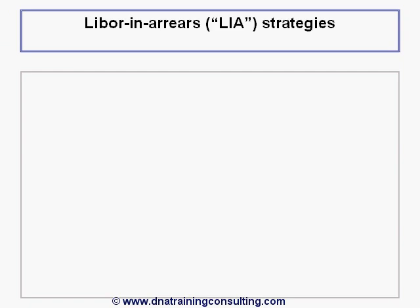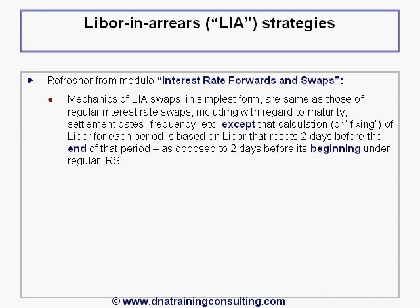LIBOR in arrears swaps, hereafter LIA swaps, were introduced in our module on interest rate forwards and swaps, but a basic refresher is provided here before advancing to more sophisticated applications. The mechanics of LIA swaps in their simplest form are exactly the same as those of regular interest rate swaps, including with regard to maturity, settlement dates, frequency, and so on, except that the calculation or fixing of LIBOR for each period is based on the LIBOR that resets two days before the end of that period, as opposed to two days before its beginning under a regular IRS.